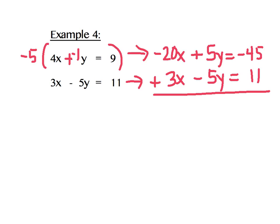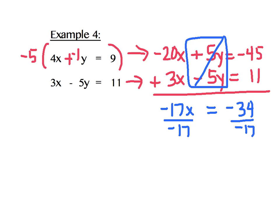I'm going to go ahead and add up my columns. Here are my opposites, which will cancel each other out. In my x column, I'm going to get negative 17x is equal to. And in my constants column, negative 45 plus 11 gives me negative 34. Divide both sides by a negative 17 to isolate x, which will give me x equals positive 2.